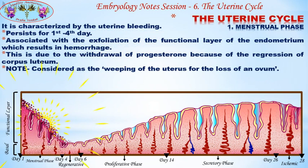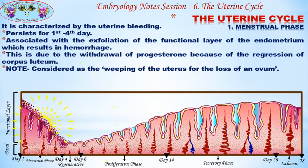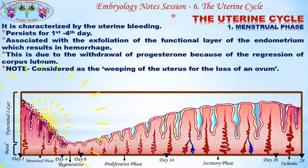The first is the menstrual phase, characterized by uterine bleeding and persisting from the first to fourth day. It is associated with the exfoliation of the functional layer of the endometrium, which results in hemorrhage. This is due to the withdrawal of progesterone because of the regression of the corpus luteum. It is also considered as the weeping of the uterus for the loss of an ovum.